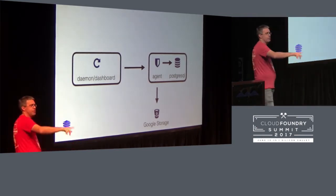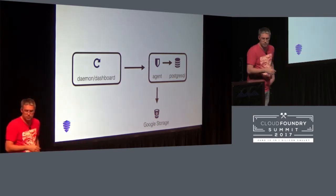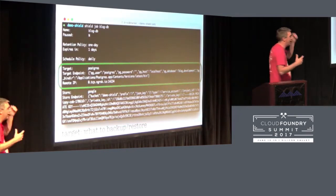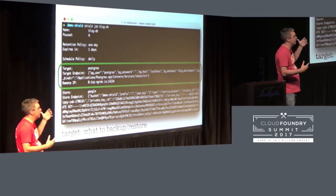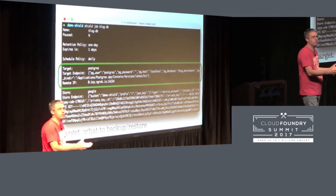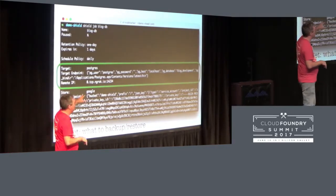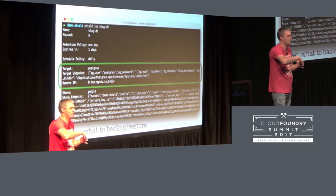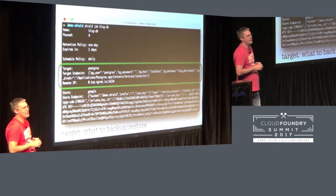What's noteworthy in this diagram is that the agent is the thing that talks to Google Compute. The backups are not all coming back to the daemon and then being shipped off. The daemon merely triggers the request to do the backup or triggers the request to do the restore. I literally had Shield agent running on my laptop with ngrok — a remote tunneling tool — pointing to it, and the Shield daemon running somewhere else on the internet, backing up my laptop's database.